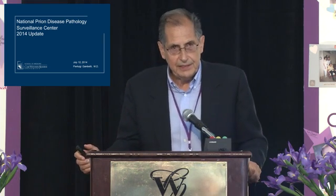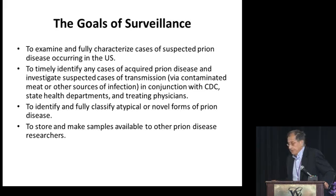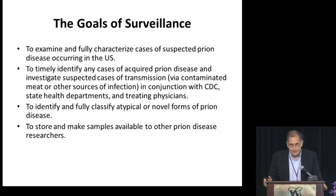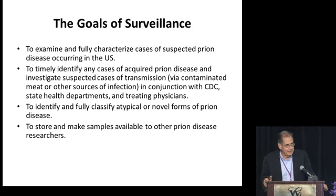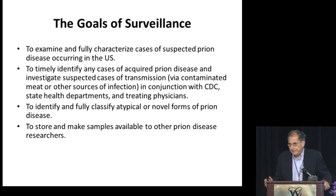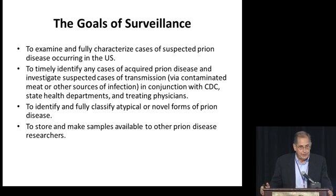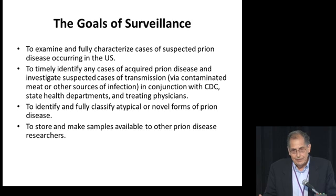I would also like to show you a few data concerning new tests that we perform at the National Prion Disease Pathology Surveillance Center. These are the goals of the U.S. National Prion Disease Pathology Surveillance Center. It is a different approach that our center has adopted as compared to European or other centers — we are really dealing with cases that were all proven to be a prion disease by tissue analysis.